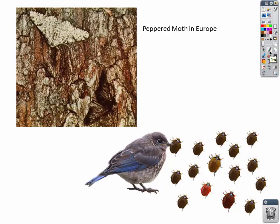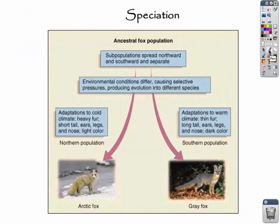Once Europe cleaned itself up and the birch trees turned white again, it was the dark ones that stuck out, and the birds picked those off. You had a shift back to the white ones — those were the ones surviving and able to reproduce, and the gene pool shifted back to the white peppered moth. That's a very interesting situation. There's also an example of a bird choosing the dark ones, causing a shift from the dark to the light.